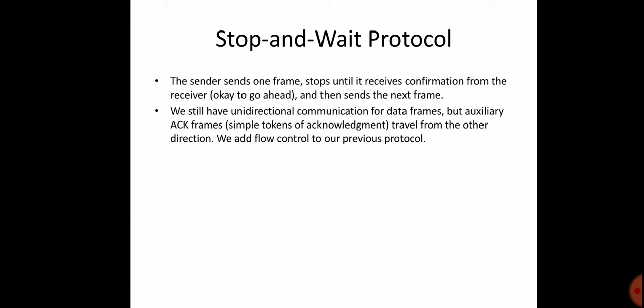In the stop-and-wait protocol, the sender sends one frame and stops until it receives confirmation from the receiver, then sends the next frame. We still have unidirectional communication for data frames, but auxiliary acknowledgement frames — a simple token of acknowledgement — travel in the other direction. We add flow control to our previous protocols.